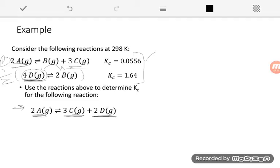So if I do both of those actions, multiply by one-half and reverse it, I'll end up with a new equation, 2B goes to 2D. And now I see that I have the correct number and it's on the correct side. But I also have to modify this equilibrium constant. So I'm going to take my K and I say, first of all, I multiplied it by one-half, so I have to use that as an exponent here, raise this to the power of one-half. But I also reverse the equation, so I need to take the inverse of this number, so 1 over 1.64.